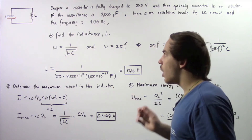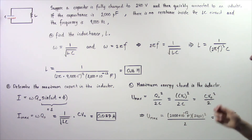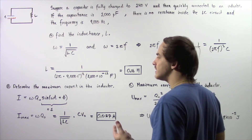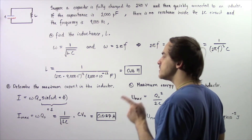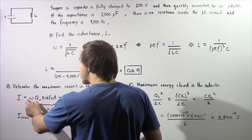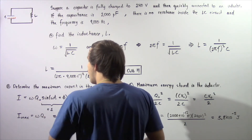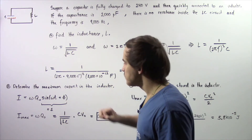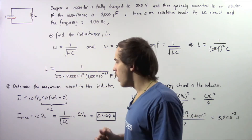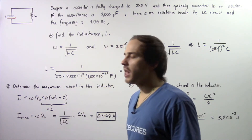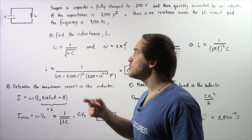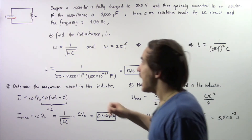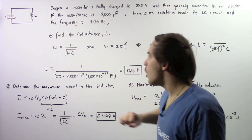Now let's move on to part B. We want to calculate the maximum current in the inductor. The equation for electric current in the inductor with respect to time is: I equals omega multiplied by Q naught multiplied by sine of omega times t plus phase angle phi. The electric current is at a maximum when the sine term equals 1, so I maximum equals omega multiplied by Q naught. Q naught is the initial electric charge on the capacitor at time zero, and Q naught equals C multiplied by V naught.